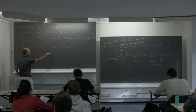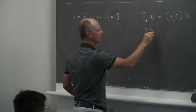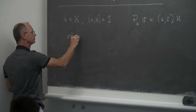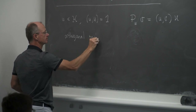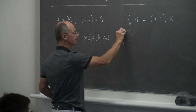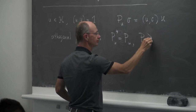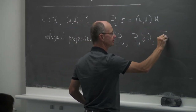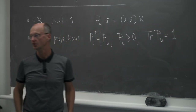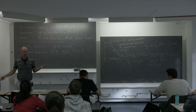Such projectors are by definition orthogonal projections. They are self-adjoint, it is easy to verify that they are non-negative, and the trace is equal to 1 — because there is one eigenvalue equal to 1 and all the other eigenvalues are equal to 0.